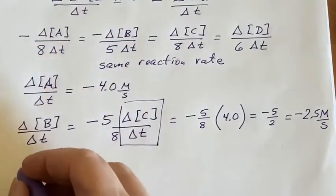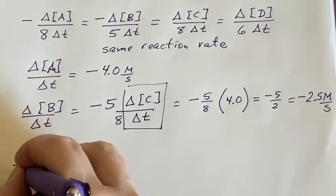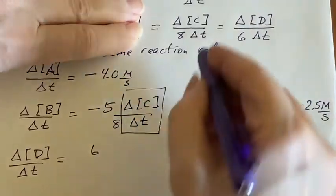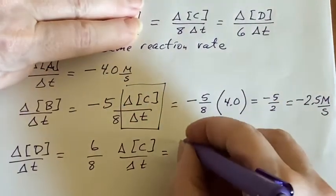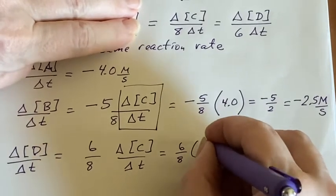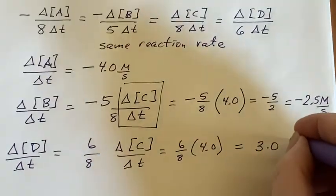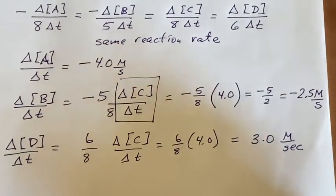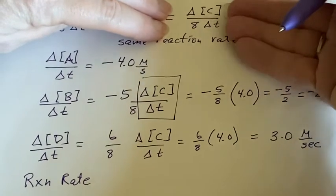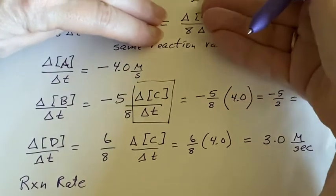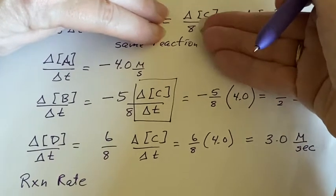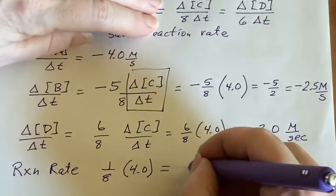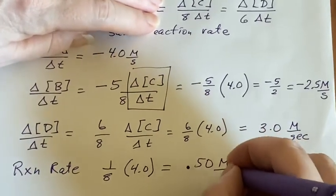We still have D to work with. Delta concentration of D over T. Now we'll look at these two. I don't want the 6. I'll write the rest of this. There's the 8. So 6 eighths of 4.0. That's going to be 3.0 molarity per second. And as long as we're talking about rates, what is the reaction rate? It's just this. But we were told what delta concentration of C over delta T was not with the 8. So 1 eighth times 4.0, which will mean it is 0.50 molarity per second.